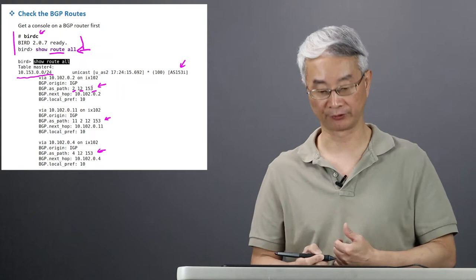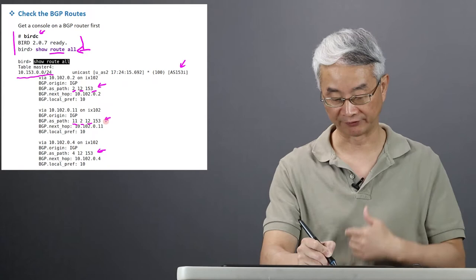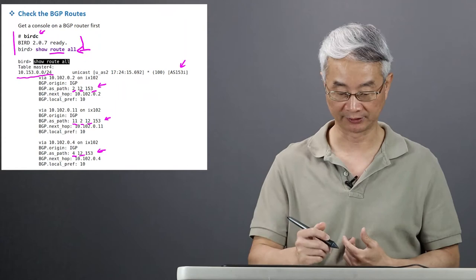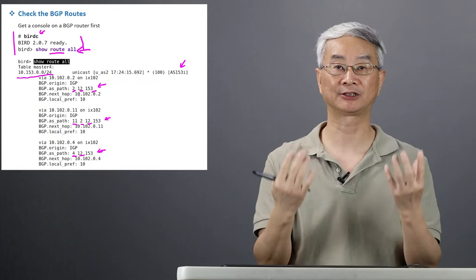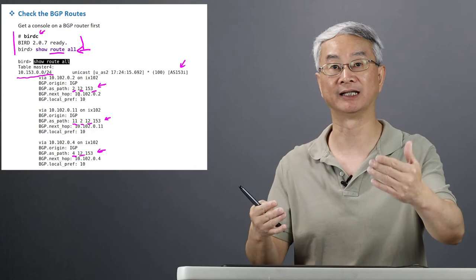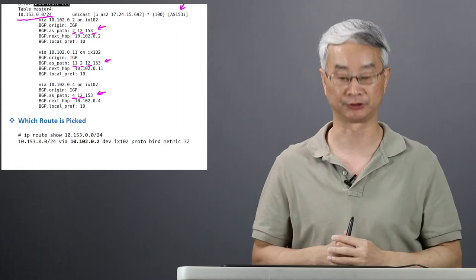I can also reach AS153 through AS11, AS2, AS12 — or through AS4 and AS12. Because I have three service providers, I got these three routes. Each of them announces that they can reach the final destination and I just need to pick which one to use. That selection of the route depends on many criteria which I'm not going to dive into here. It's not necessarily based on the shortest path — there are many other factors, including business and political factors.